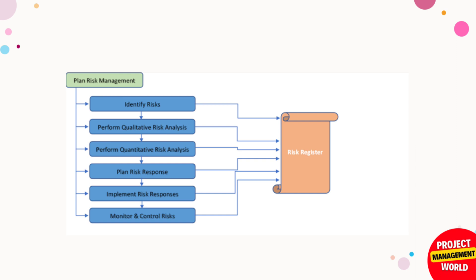Now let's see the steps to perform a risk register. Under plan risk management, the first step is to identify risks. Then we perform qualitative risk analysis — a subjective analysis giving a rating for probability and impact. If needed, we also do quantitative risk analysis, which quantifies the values from qualitative analysis. After that, we plan risk responses, then implement those responses, and finally monitor and control the risks.